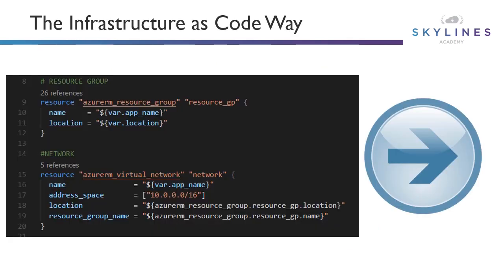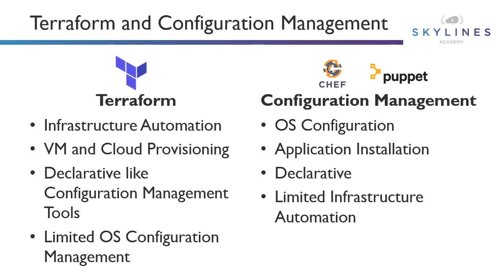That's where the infrastructure as code way really shines, because it allows us to build one document that says this is the state of the infrastructure. Everybody from those respective teams can help build this document. We have infrastructure as code as a single source of truth to declare how we want our environment to be. And that brings us to configuration management tools like Puppet and Chef, and how Terraform compares.